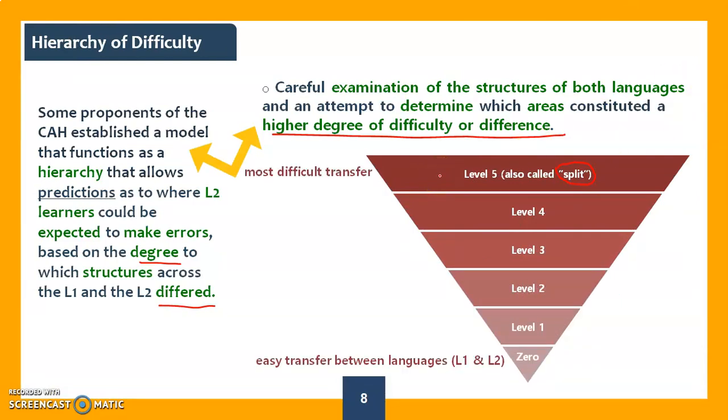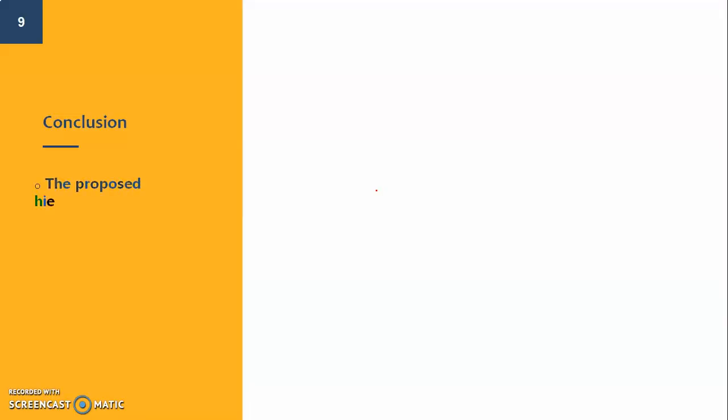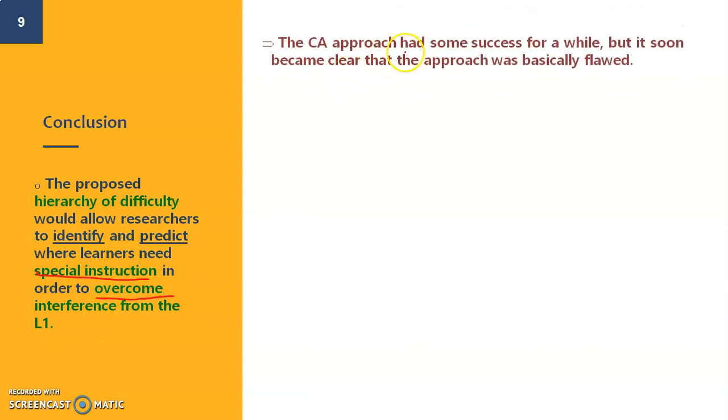In conclusion, the proposed hierarchy of difficulty allowed researchers to identify and predict areas where learners needed special instruction to overcome the errors they make. The same approach was successful and is important. However, it was still flawed. There was a lot missing and there were a lot of areas that were not covered by the CAH approach. Predictions about similarities and differences were generally subjective.